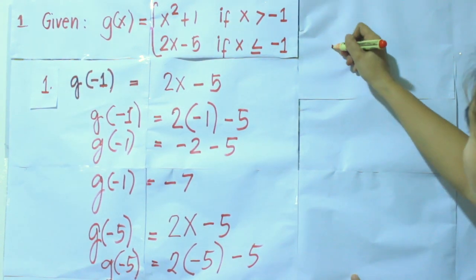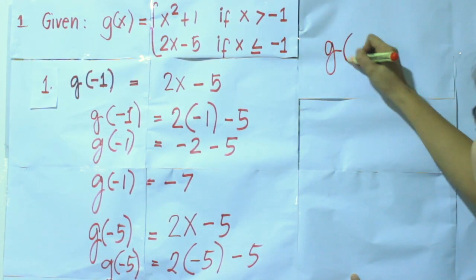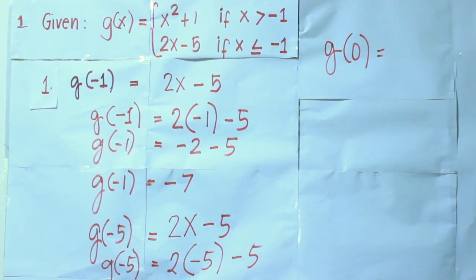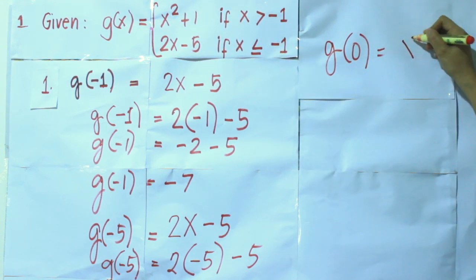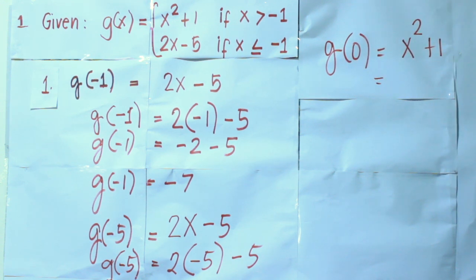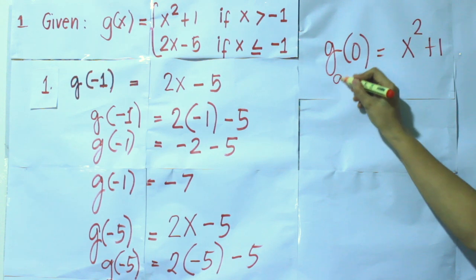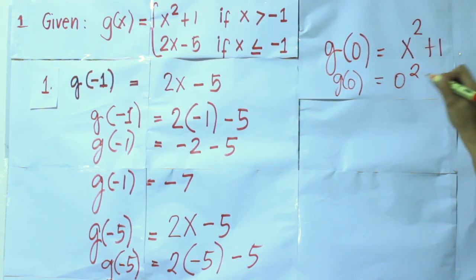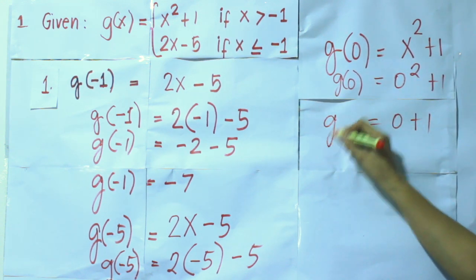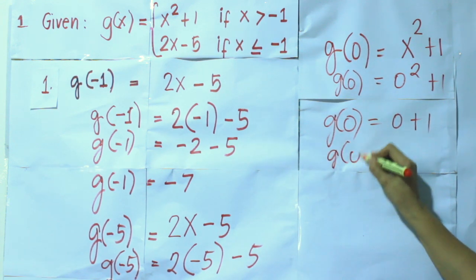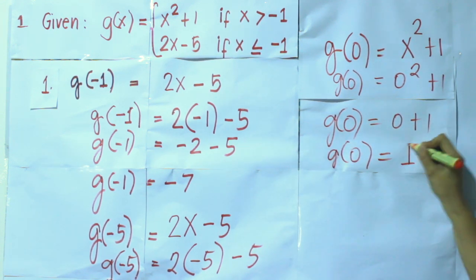For g of 0: we know that 0 is greater than negative 1, therefore we will be using x squared plus 1. Replacing x by 0, that gives us 0 squared plus 1. We know that 0 squared is 0, so 0 plus 1 means g of 0 is equal to 1.